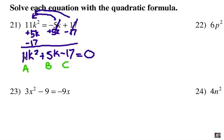Now this is in standard form, and I'm going to locate my A, which is positive 11, B is a positive 5, and C is a negative 17. Now we're going to substitute it in the quadratic formula and solve.